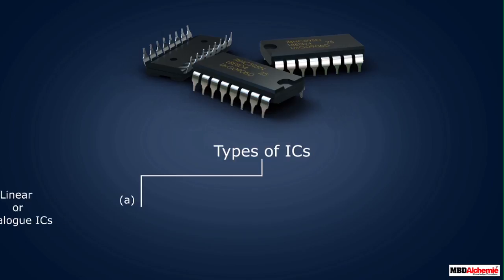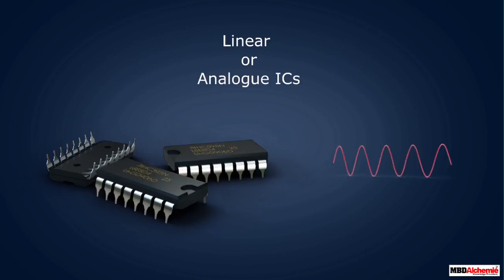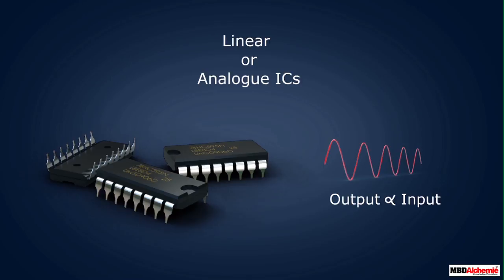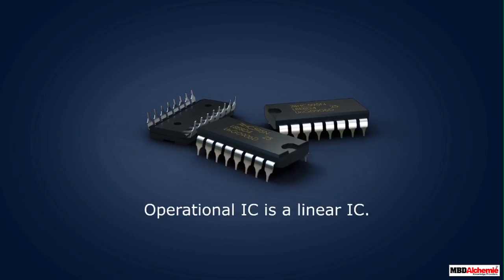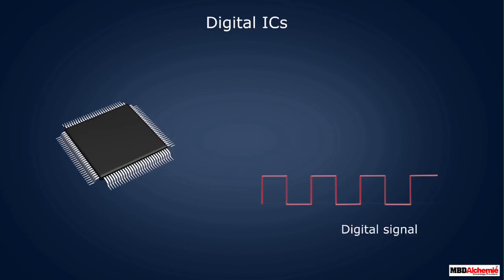ICs can be grouped into categories depending on the nature of input signals: (a) linear or analog ICs, and (b) digital ICs. In linear ICs, the input signals are analog signals which change smoothly and continuously over a range of values between a maximum and a minimum. In this case, the output is almost directly proportional to the input — that is, it varies linearly with the input. The operational amplifier is an example of a linear IC.